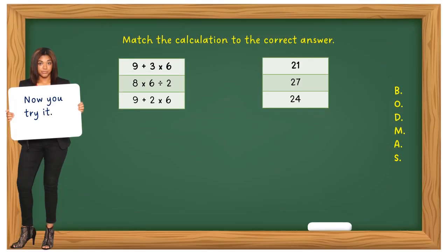Now you try it — stop the video and have a go. So how did you do? The first one: 9 plus 3 times 6 gives 27. 8 times 6 divided by 2 gives 24 — remember multiply and divide have equal value so you can go left to right. And the final one: 9 plus 2 times 6 — do the multiplication first: 2 times 6 plus 9 is 21. If you got those, well done.